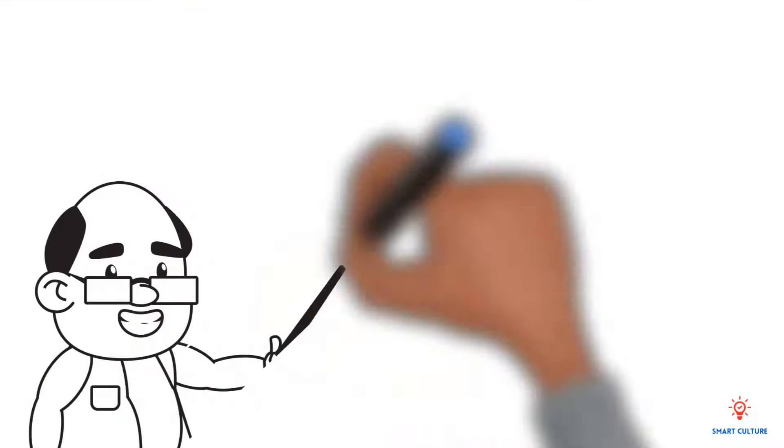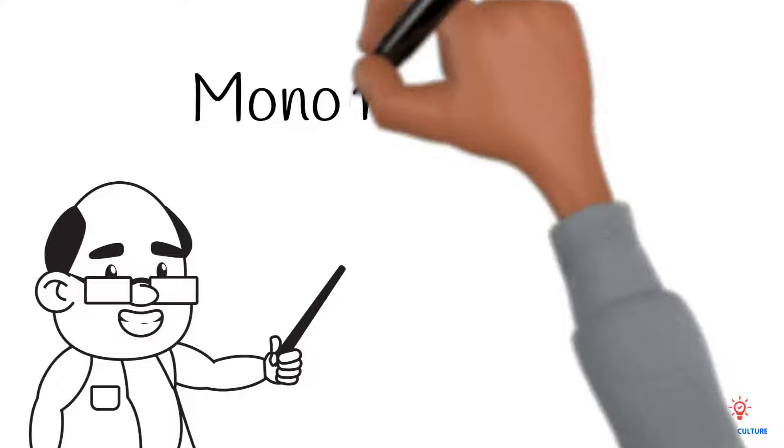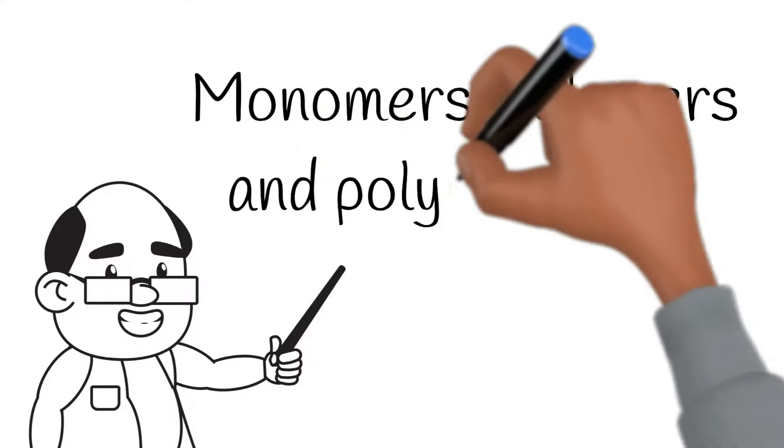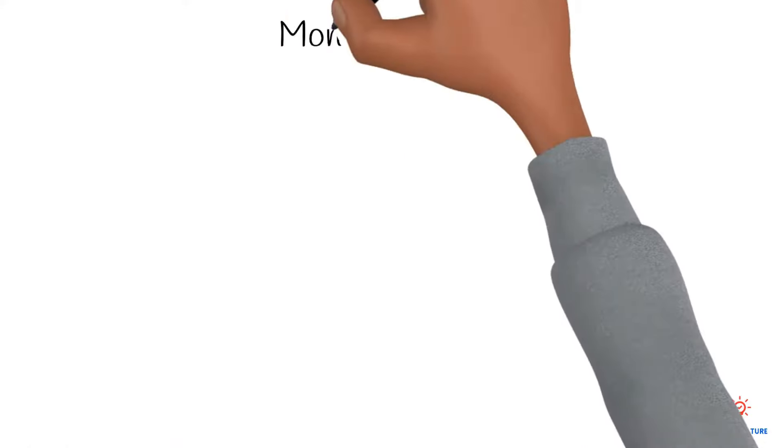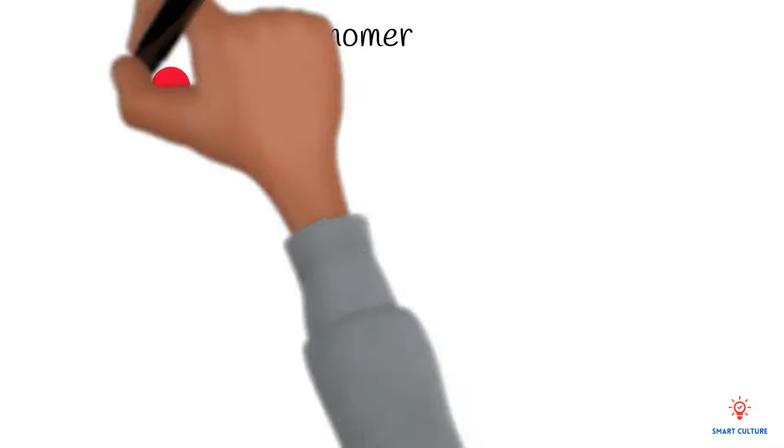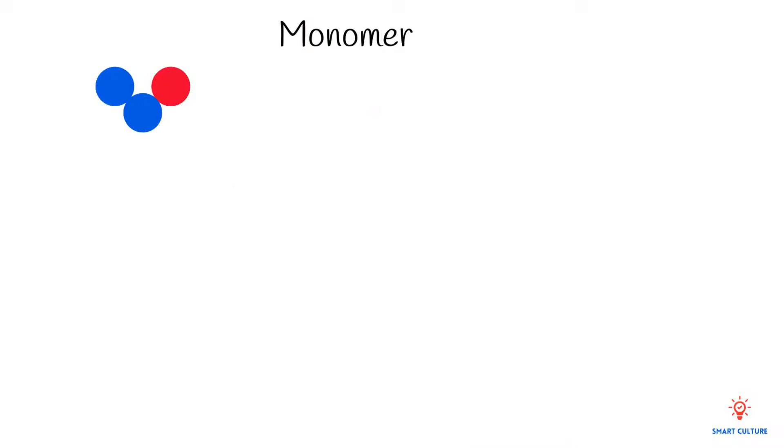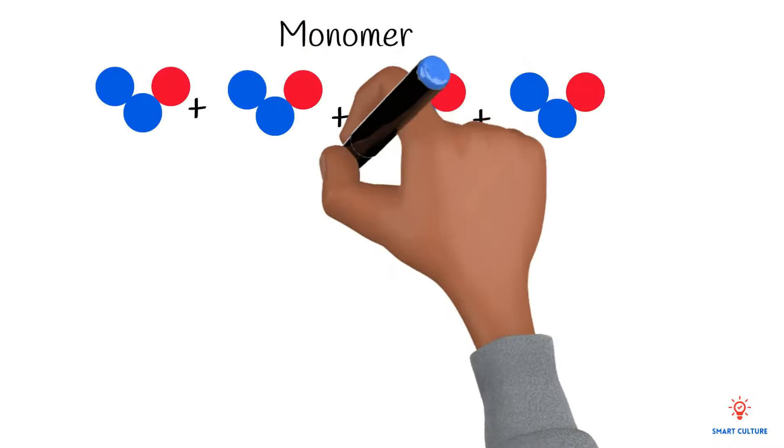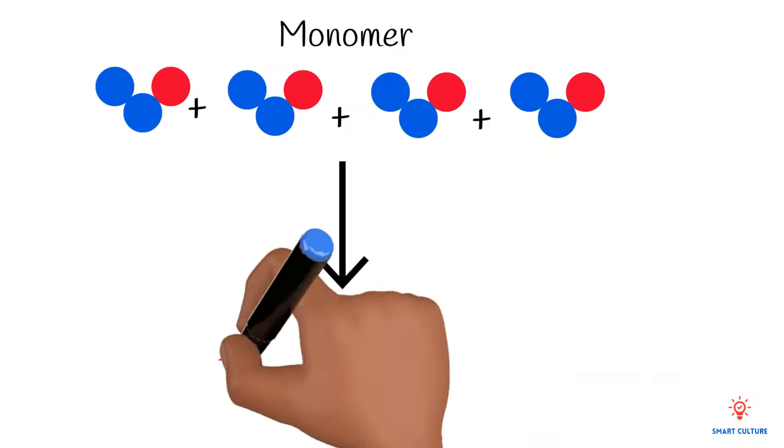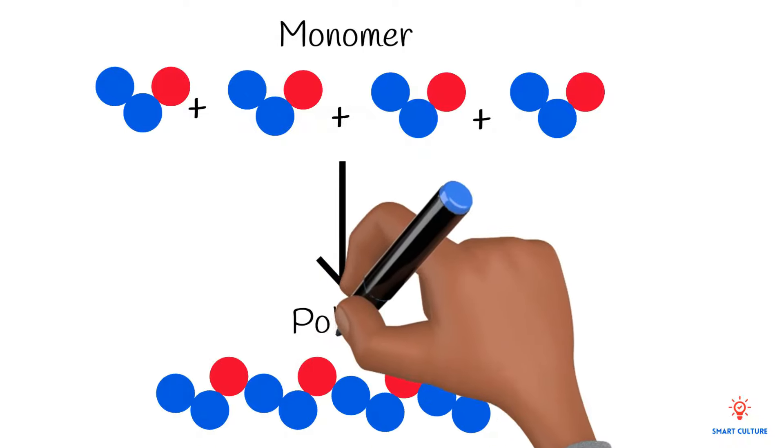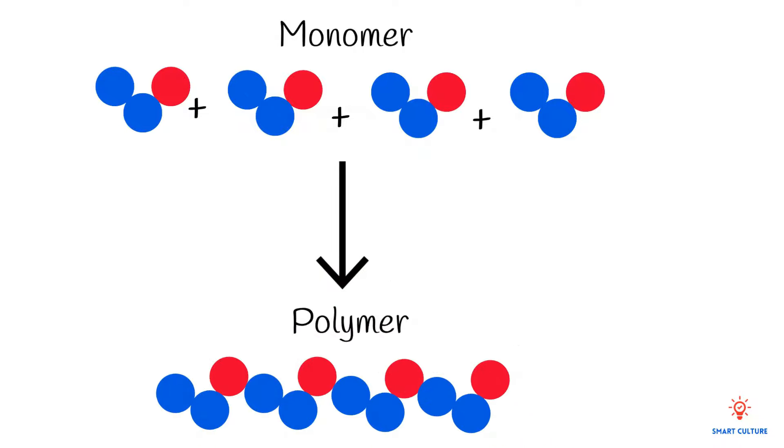In this video, we'll discuss monomers, polymers, and polymerization. So what is a monomer? Well, a monomer is just a small organic molecule. A monomer can react with other molecules to form very large molecules or polymers.